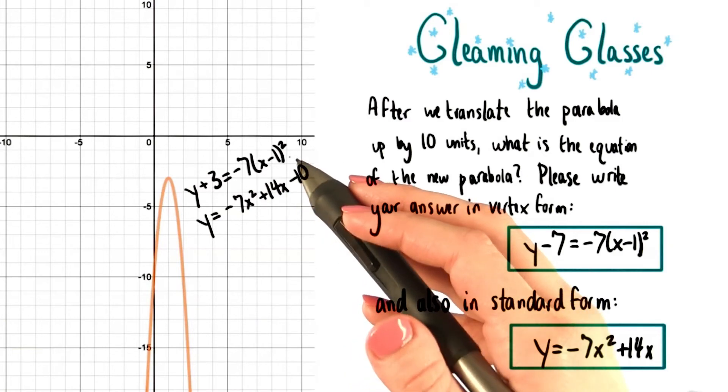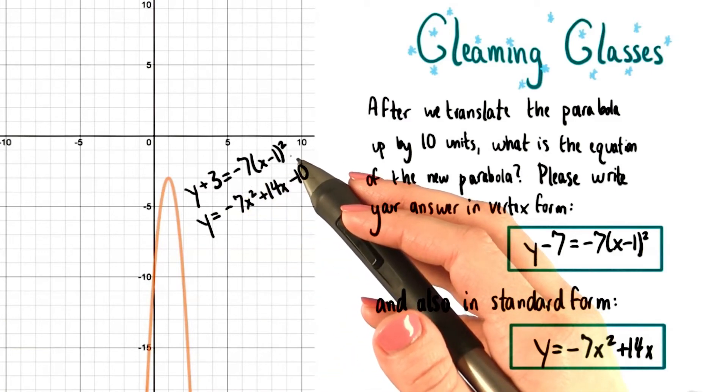It means the right side of the equation, which contains the horizontal component of the vertex, is not going to change at all.